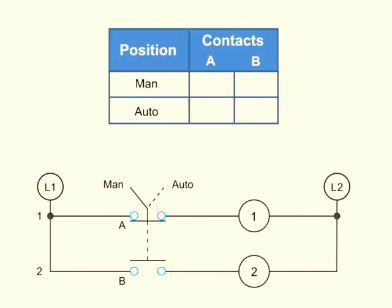The truth table can be used to easily interpret what contacts are closed for a particular position. An X is placed in the table if a contact is closed in any position; an O is used to depict that a contact is open. Thus, if the selector switch is in the MAN position, A is X or closed, and B is O or open.